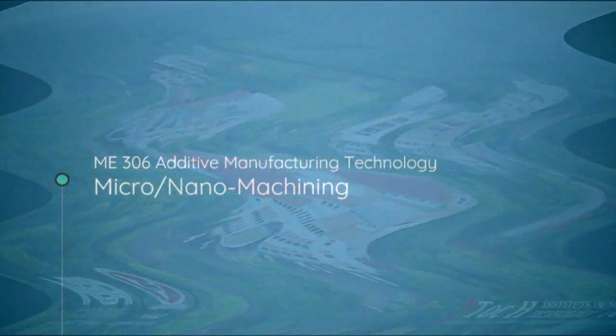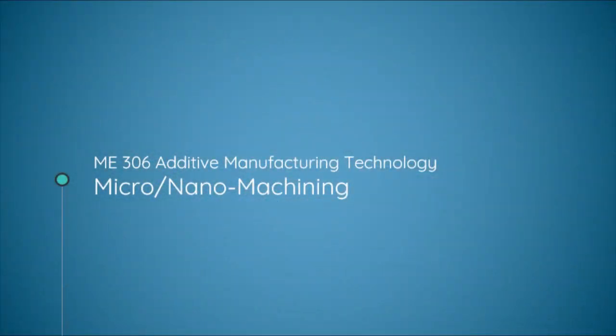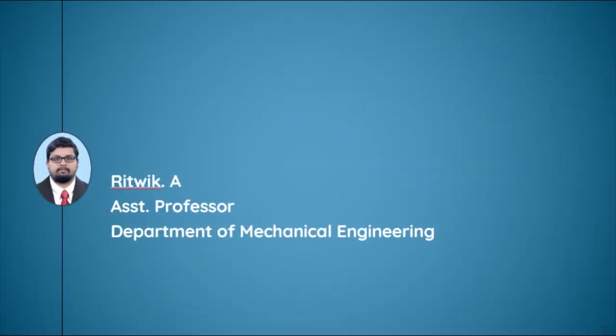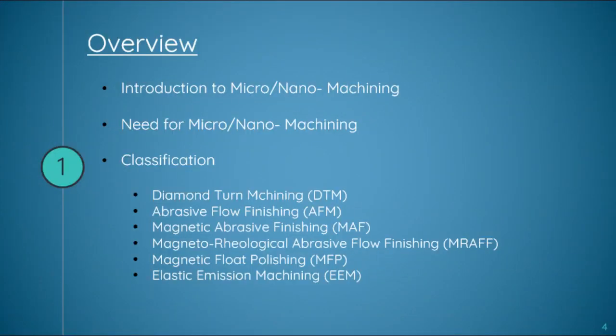Today we shall discuss micro machining and nano machining. In this presentation we will deal with the concepts of micro and nano machining, the need for micro and nano machining, and its classification. We will be focusing on the following types: diamond turn machining (DTM), abrasive flow finishing (AFM), magnetic abrasive finishing (MAF), magnetorheological abrasive flow finishing (MRAFF), magnetic float polishing (MFP), and elastic emission machining (EEM).